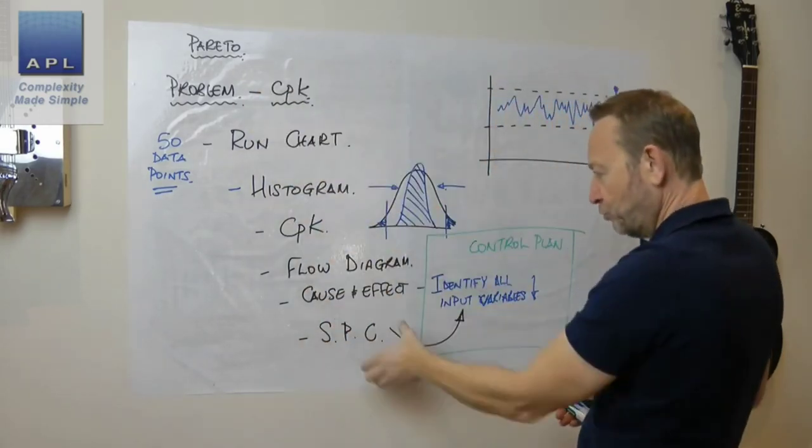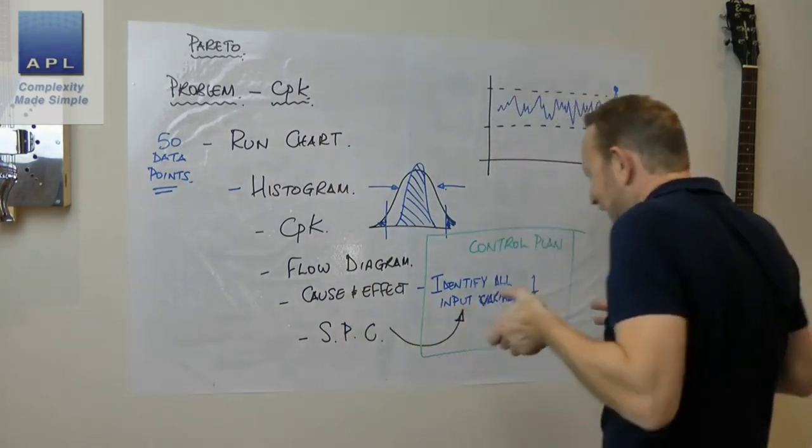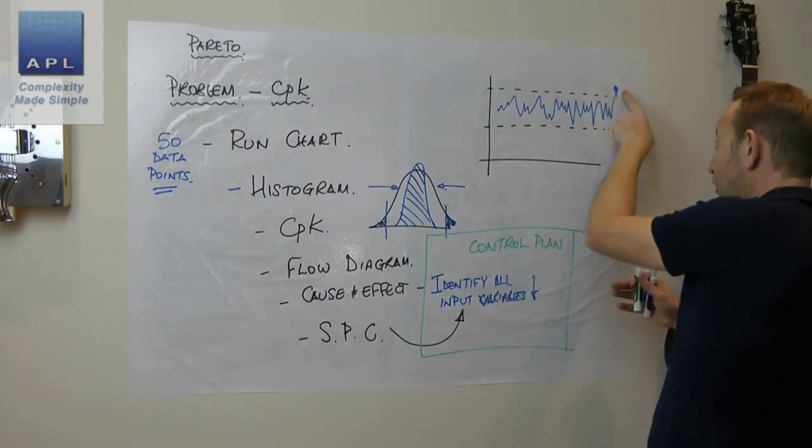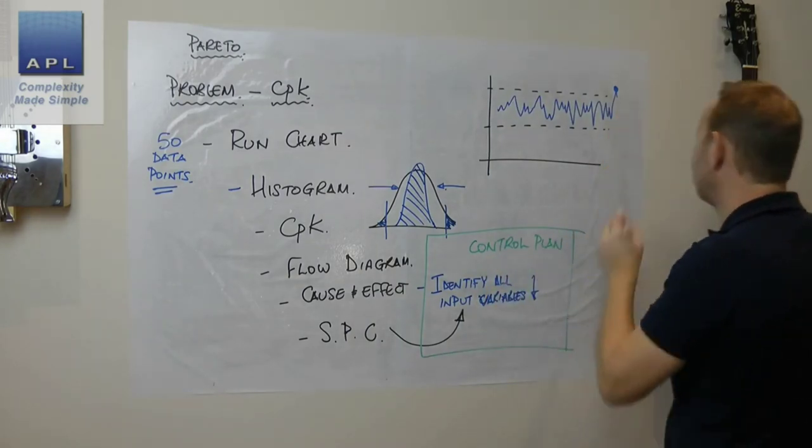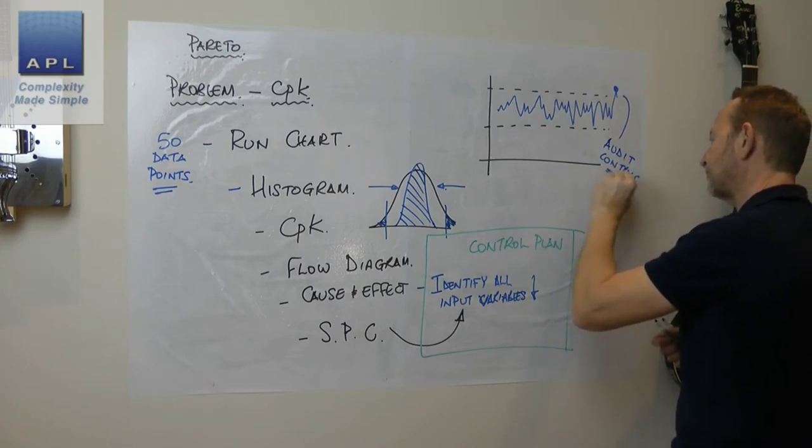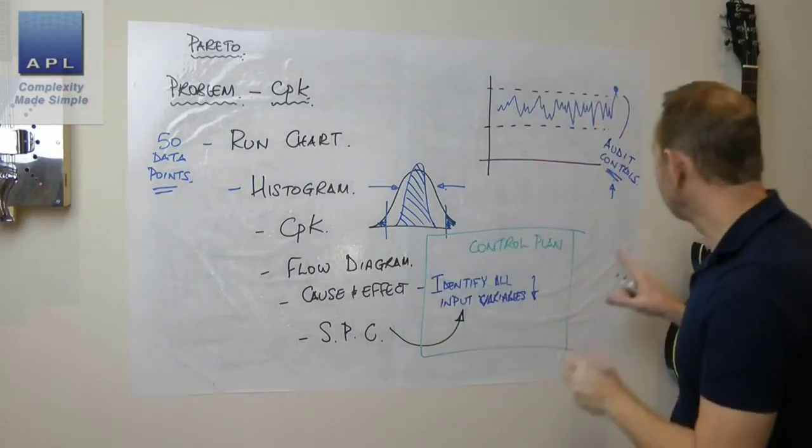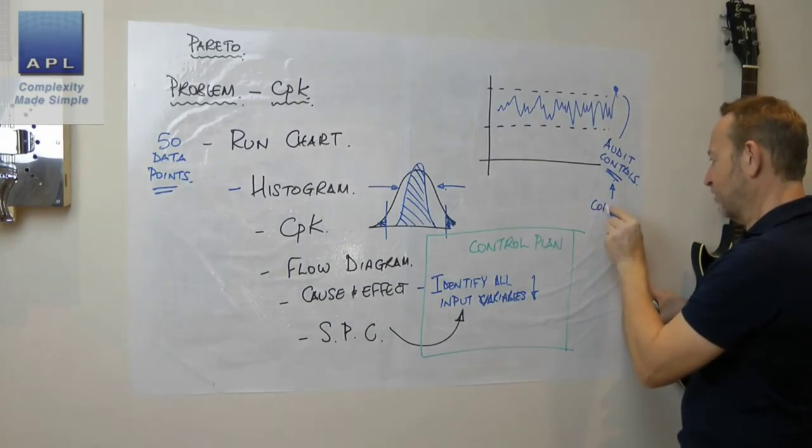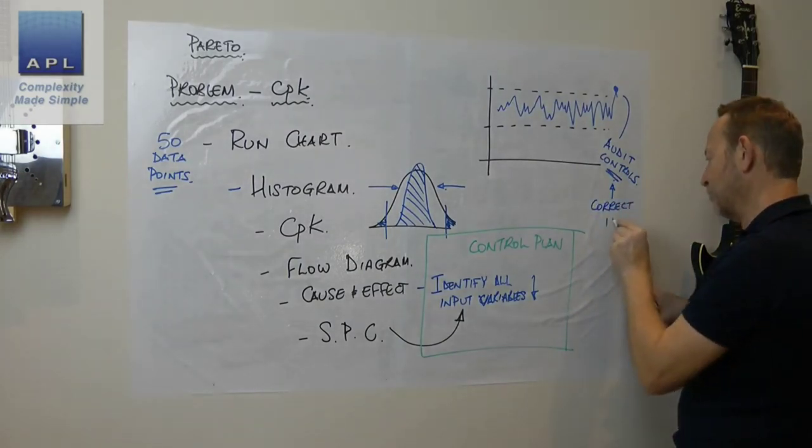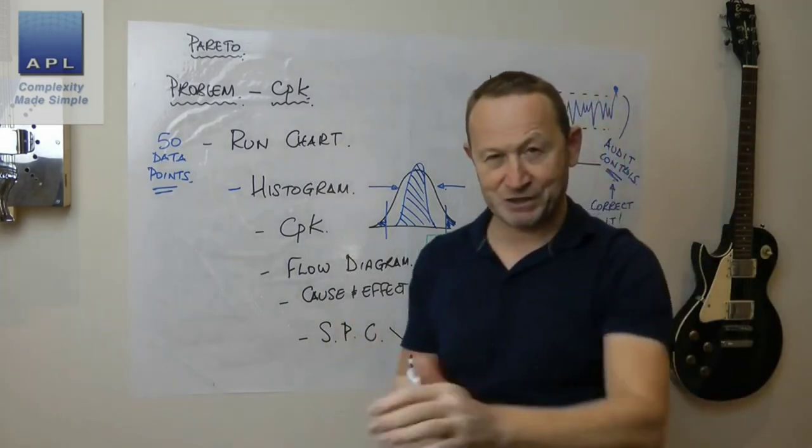We've used the seven quality tools in order. We've got the SPC linked to the control plan. We get an out-of-control point on the SPC chart - what do we do? We simply audit the controls, and when we find the one that's no longer correct, we correct it.